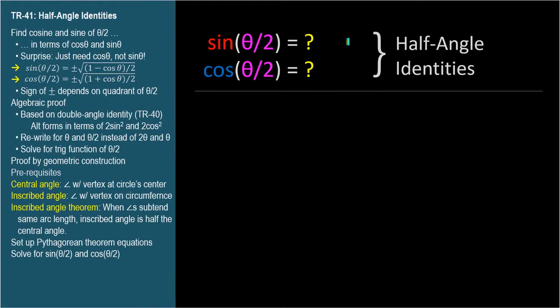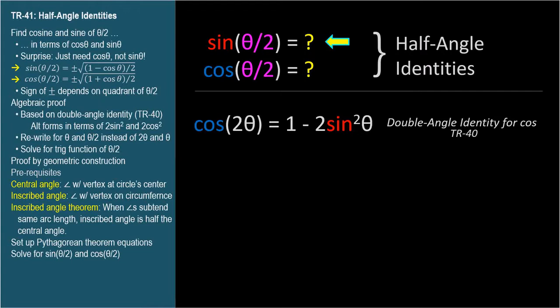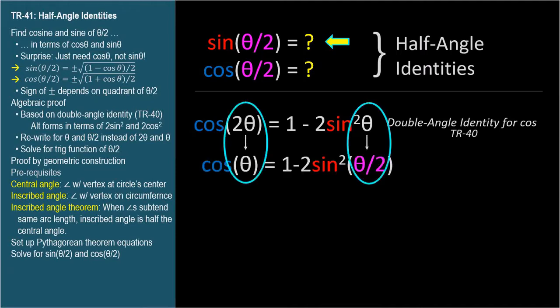To find the identity for sine theta over 2, we'll start with one of the double angle identities for cosine 2 theta — the one in terms of sine theta: cosine 2 theta equals 1 minus 2 sine squared theta. This identity is true for any angle theta, so we'll rewrite it in terms of a smaller angle theta that's half the size. So we know that cosine theta equals 1 minus 2 sine squared theta over 2.